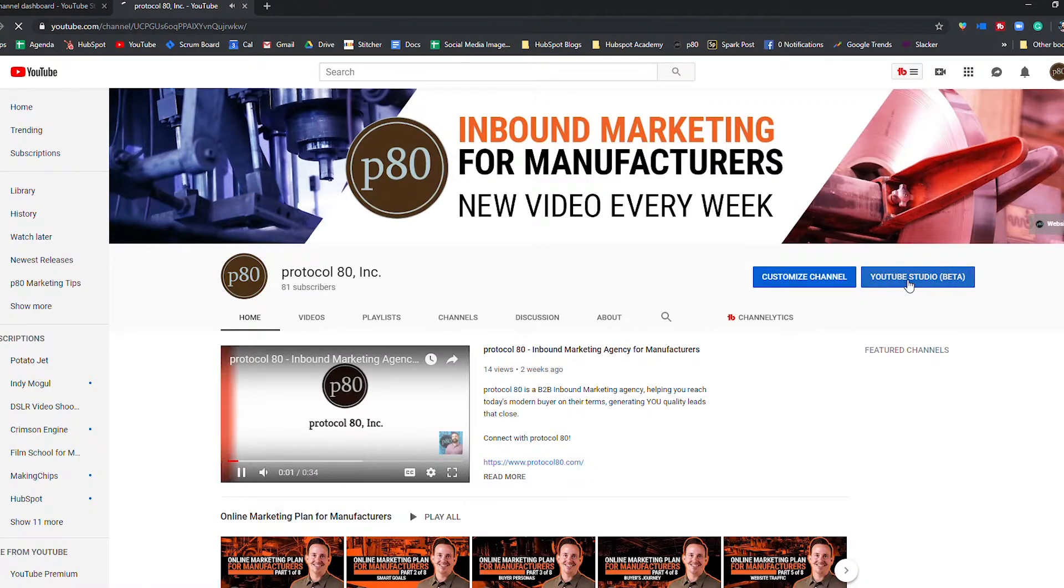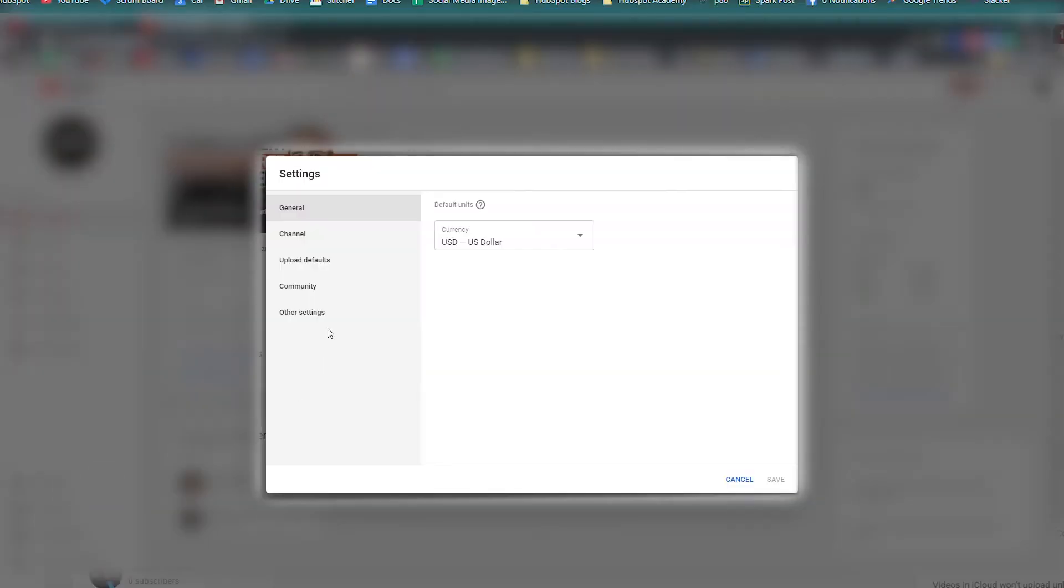To set your video watermark, open the creator studio, go to settings, channel, branding, and upload your icon. Click entire video for the display time, and now click save. Now you've made your YouTube channel your own.